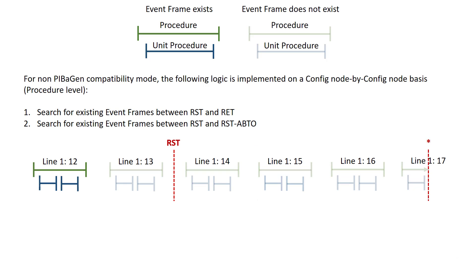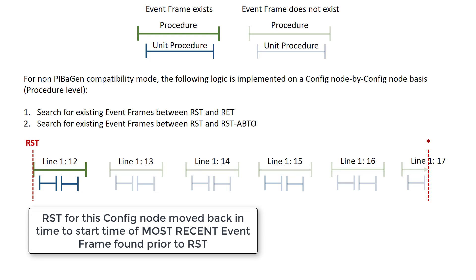If no Event Frame is found between RST and RET, the interface checks for any Event Frames between RST and RST minus ABTO — the abandoned batch timeout — which is 100 days by default. If an Event Frame is found, RST is moved back in time to the start time of the most recent Event Frame prior to RST, in this case line 1, 12. It then recovers any unit procedures or sub-batches within that Event Frame, plus all Event Frames moving forward up until RET.